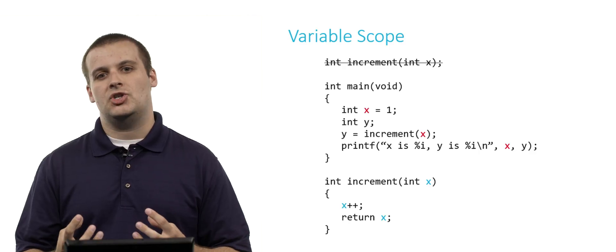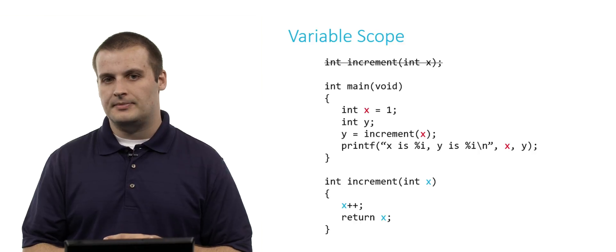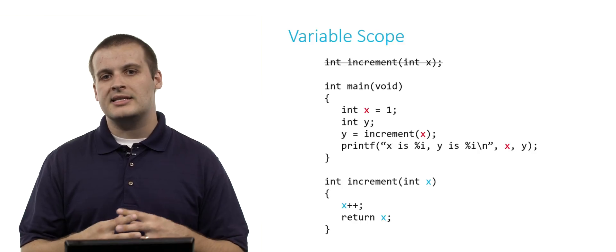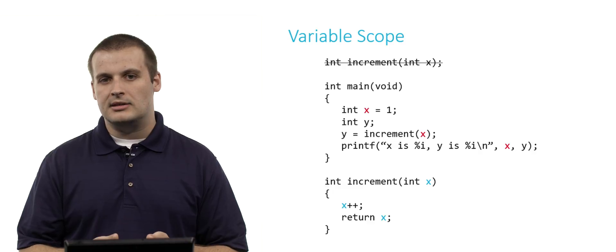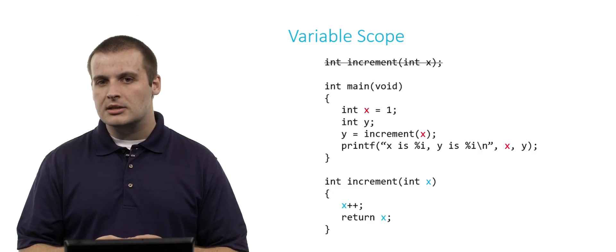And of course, the crux of this issue is trying to suss out which x gets changed and how does it get changed. So I've colored every instance of x that's local to main, red. And I've colored every instance of x that's local to increment, blue.